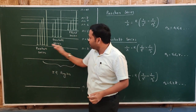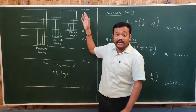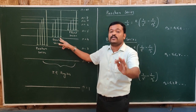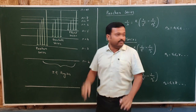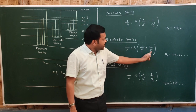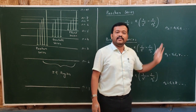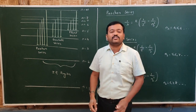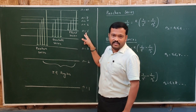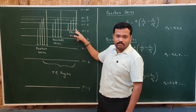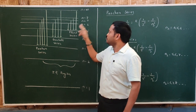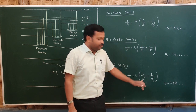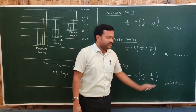For the Brackett series, the transition takes place from any higher energy orbit to the fourth energy orbit. The formula is 1/λ = R(1/4² − 1/n₂²), where n₂ starts from 5, 6, 7 up to infinity. For the Pfund series, the transition takes place from any higher energy orbit to the fifth energy orbit, and the formula is: 1/λ = R(1/5² − 1/n₂²), where n₂ is 6, 7, 8 up to infinity.